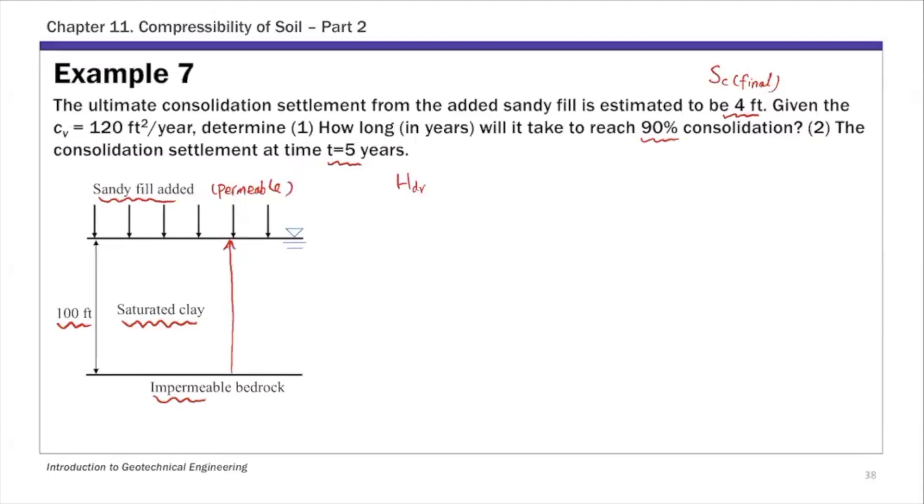The maximum drainage distance, by definition of HDR, for this problem is the thickness of the consolidating layer. This is because it's one-way drainage.